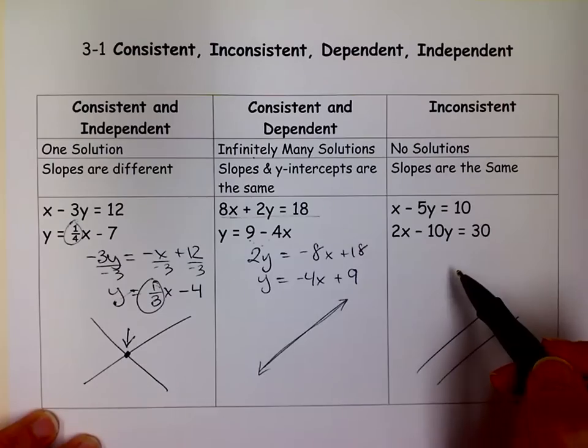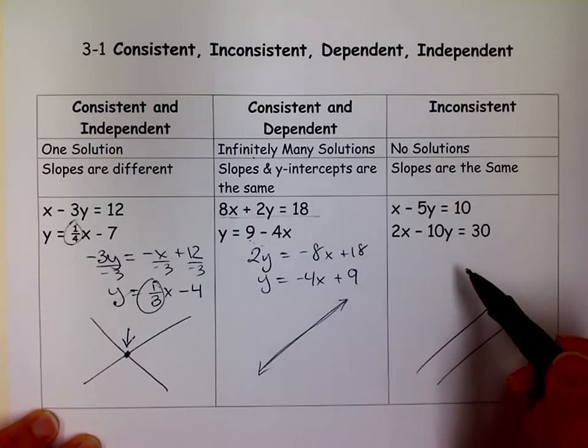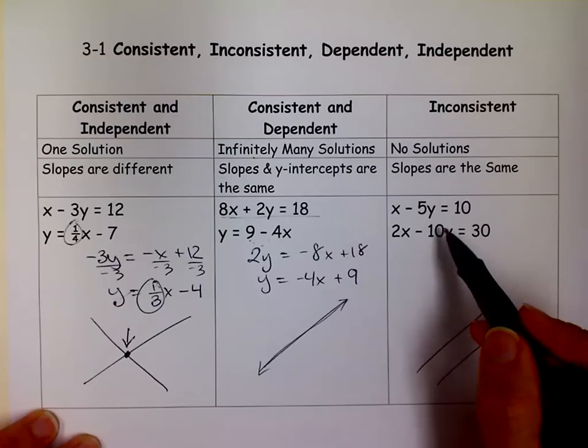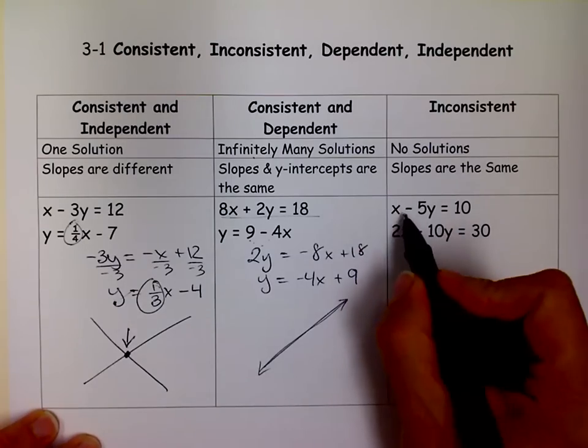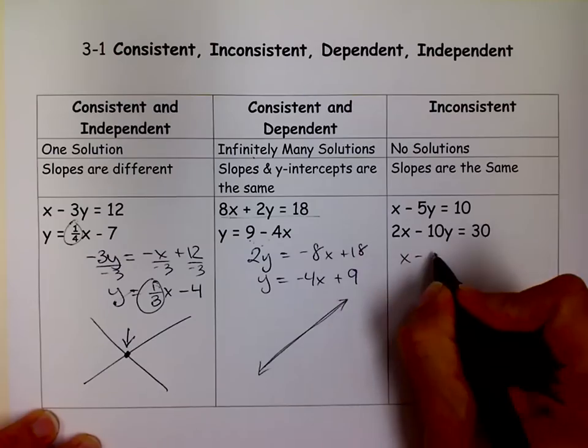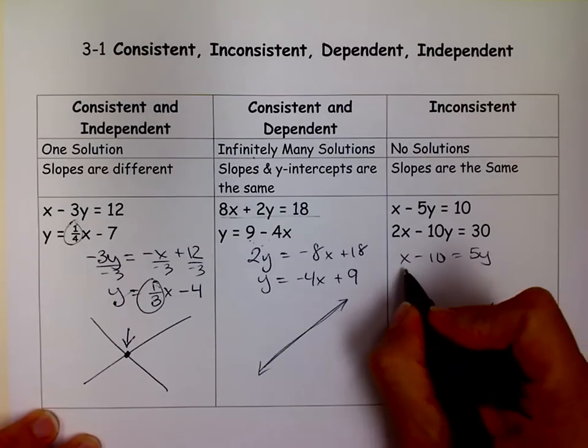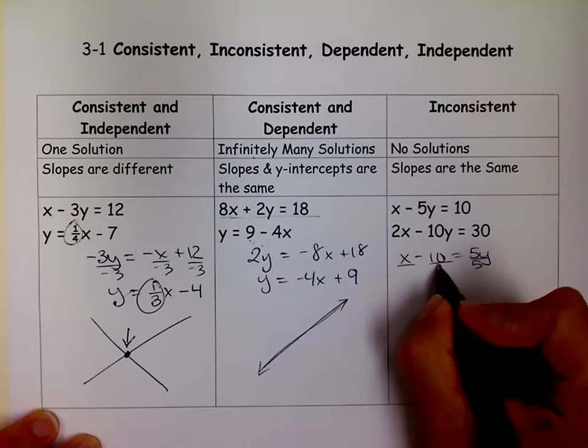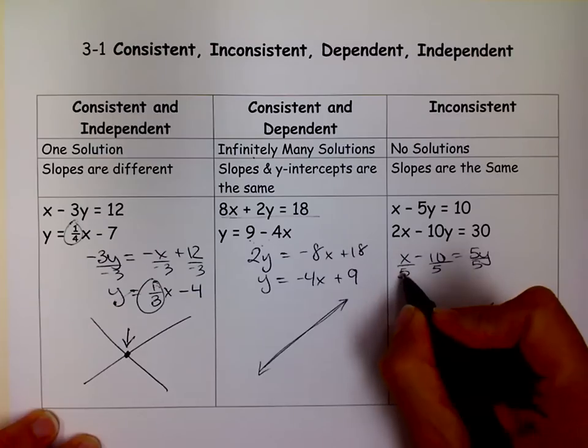Notice neither one of these are in slope-intercept form. So we can get them that way on this one. If we move the 5y over there and the 10 over here, it might be easier. And then if we divide by 5, we get 1 fifth as our slope and our y-intercept is negative 2.